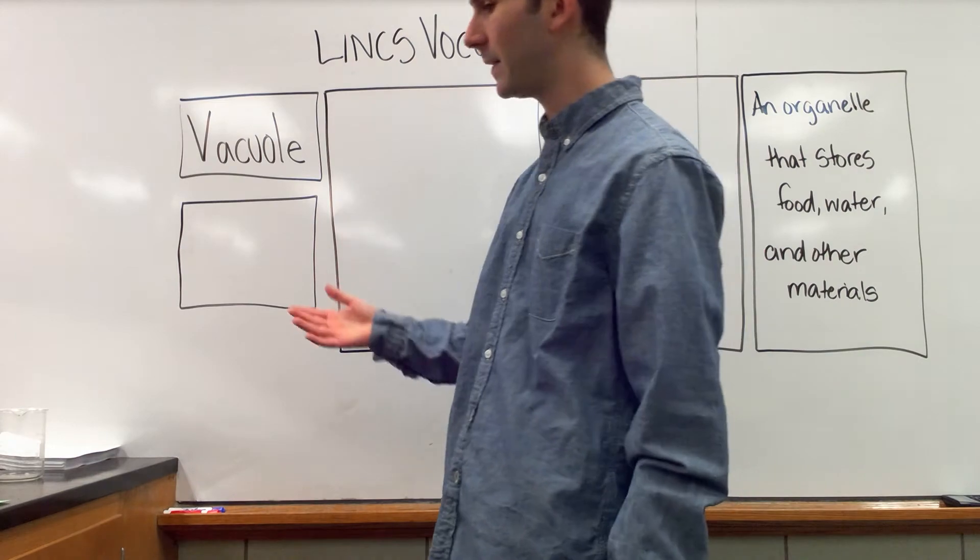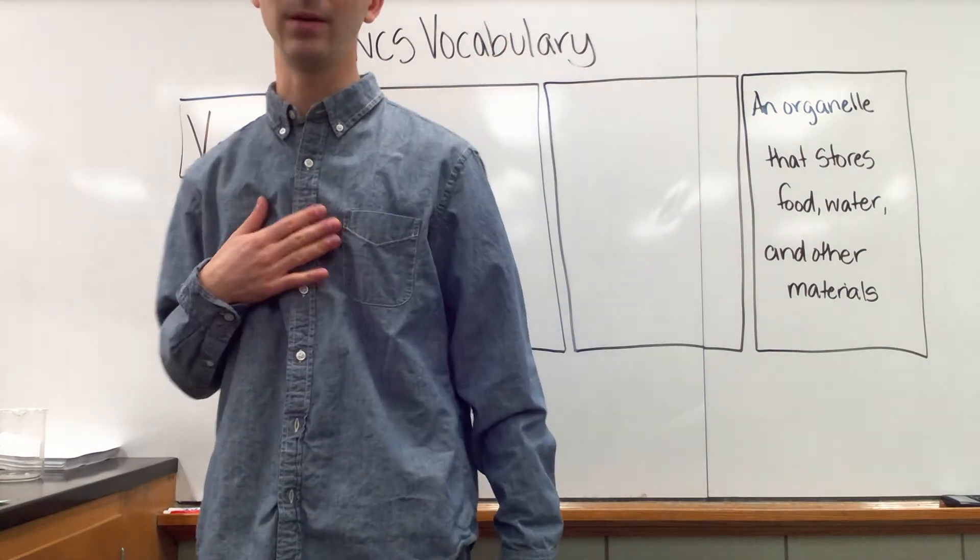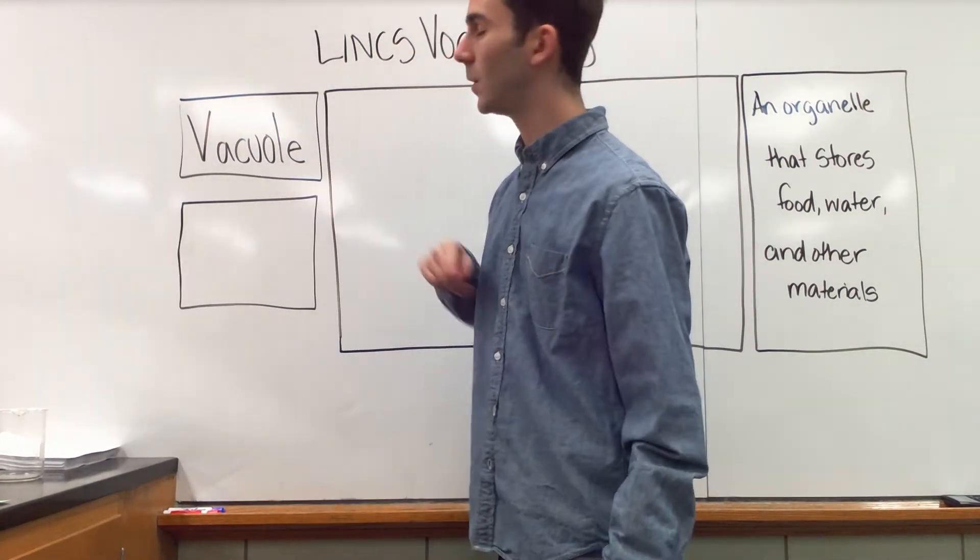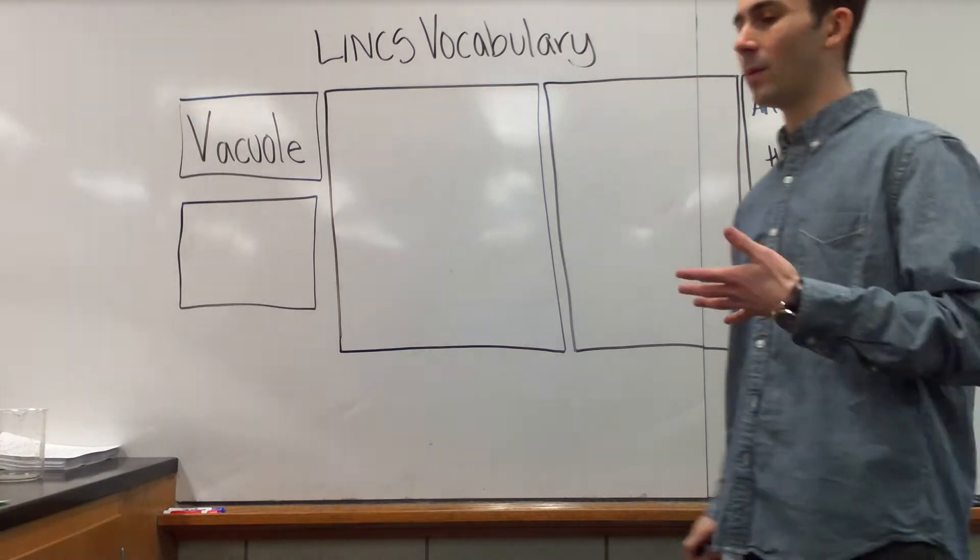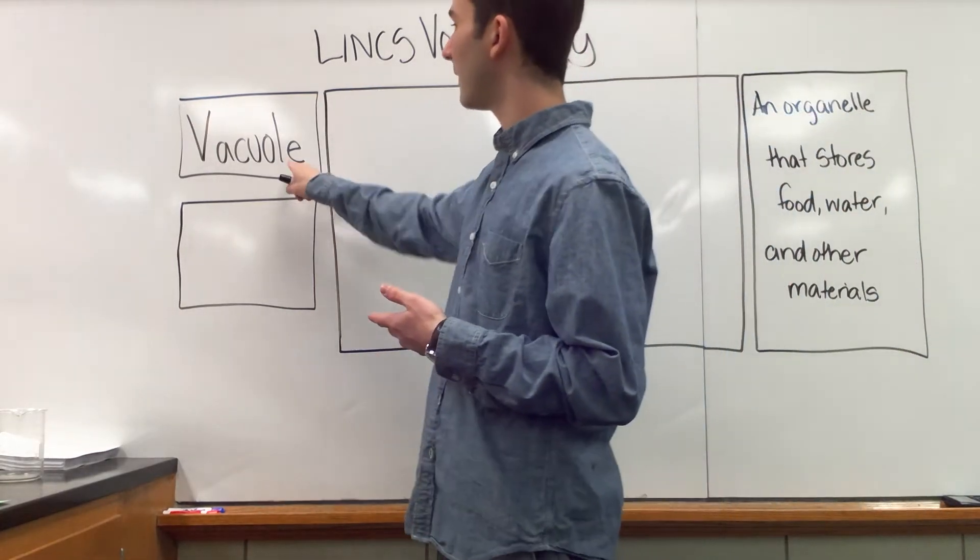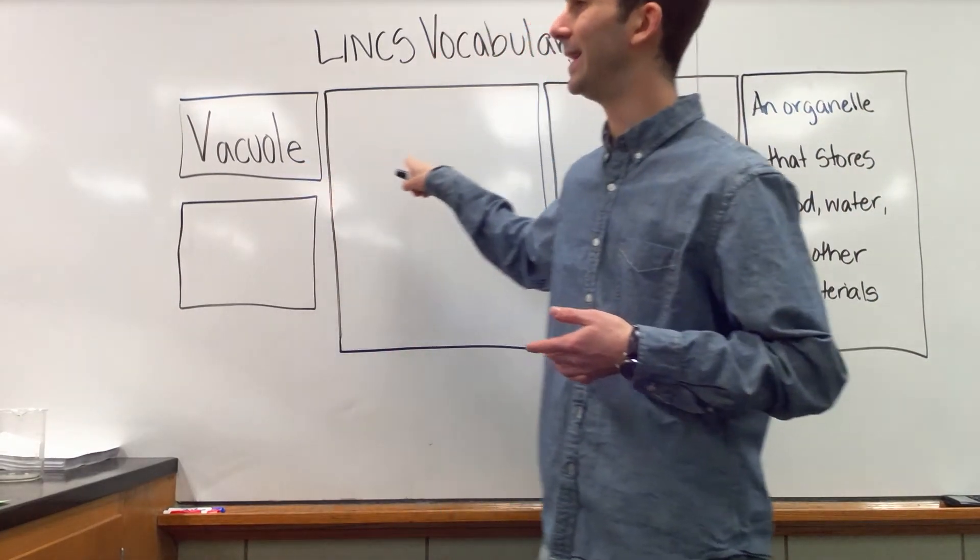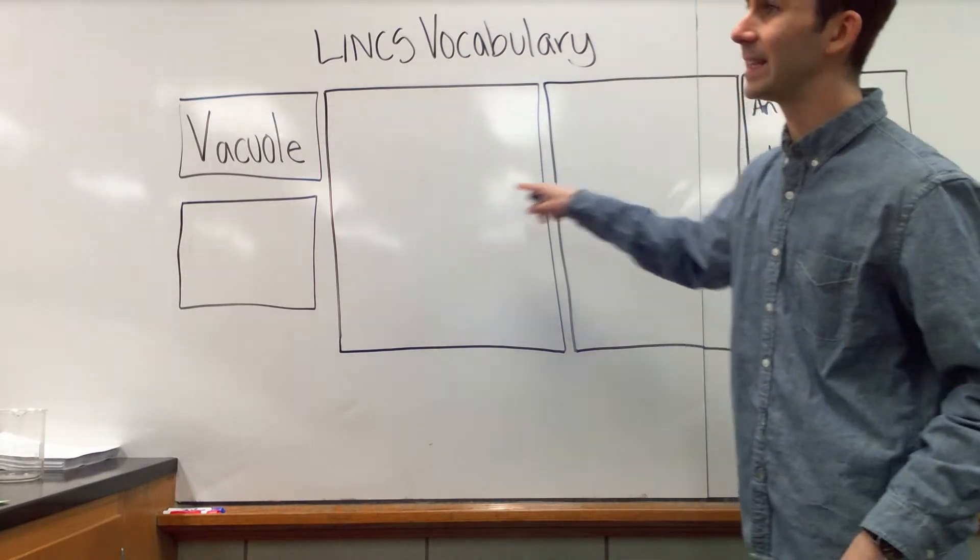After that, you read the term, you read the definition, and you're going to come up with a reminding word. So we have vacuole. A vacuole is an organelle that stores food, water, and other materials. We need to pick a word that sounds like vacuole that'll help us create a linking sentence that can link to that definition.